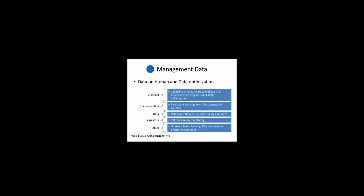Pilot studies also allow you to trial some of your regulatory requirements. IRBs can be a real sticking point in large-scale trials, and if you can have some experience previously with aspects that might put you at risk in an IRB, that can save you a lot of time. For instance, in Pennsylvania nursing home settings, IRBs are very hard to get. You also need to have a good data safety monitoring plan, and make sure your ethical practices are well in place, that all your staff is well trained in human subjects, and that you have good plans for adverse events management.